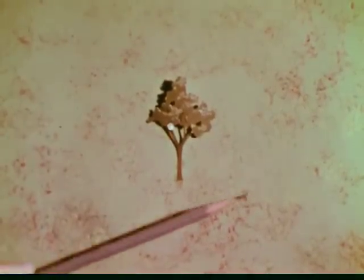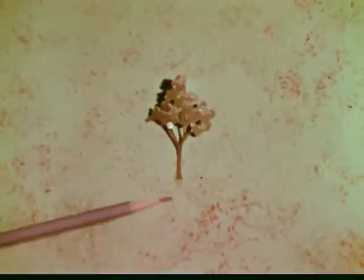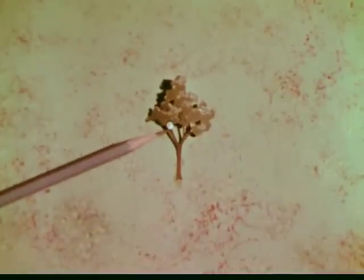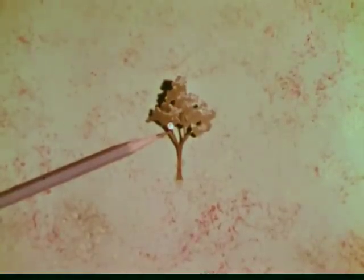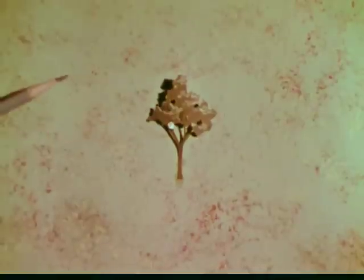The hummingbird collects nectar from the flowers, here and there, around his nest. Let's suppose that we keep a record on this map of the location of each flower the hummingbird visits.